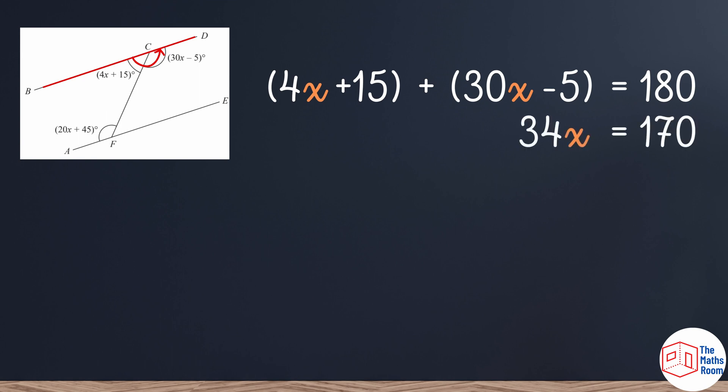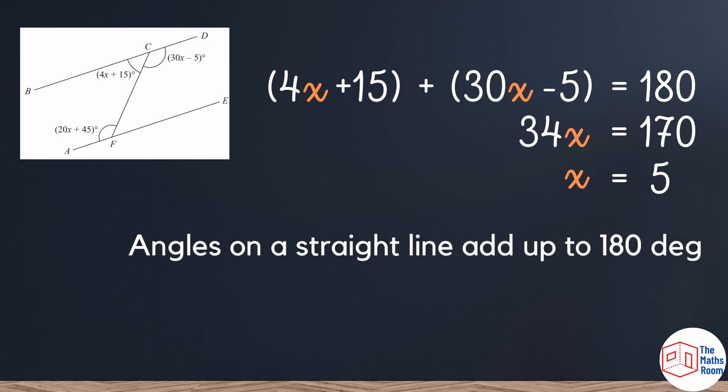Don't forget to write down your proofs along the way. In this section, you get a mark for them. So it's very important. Angles in a straight line add up to 180 degrees. That is the reason we're using, the proof behind it.